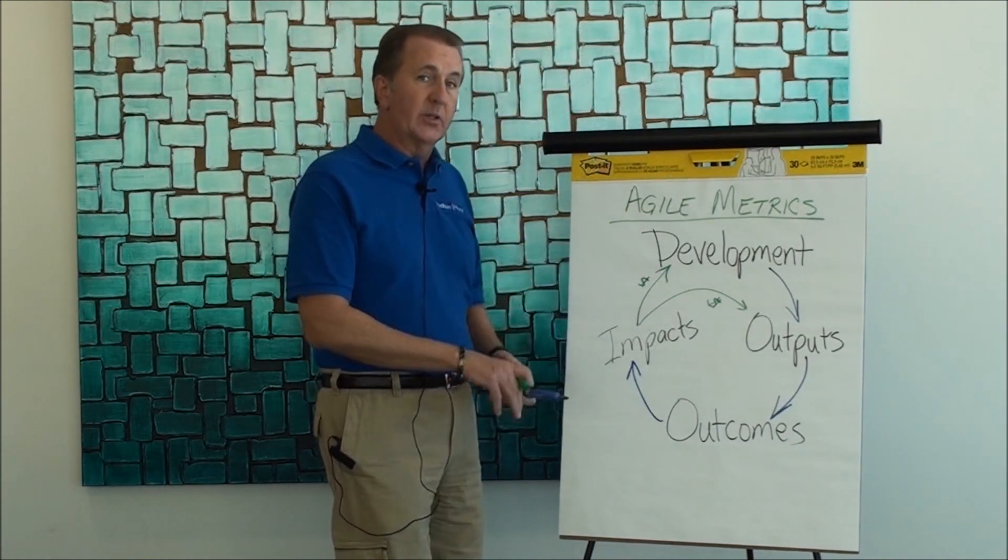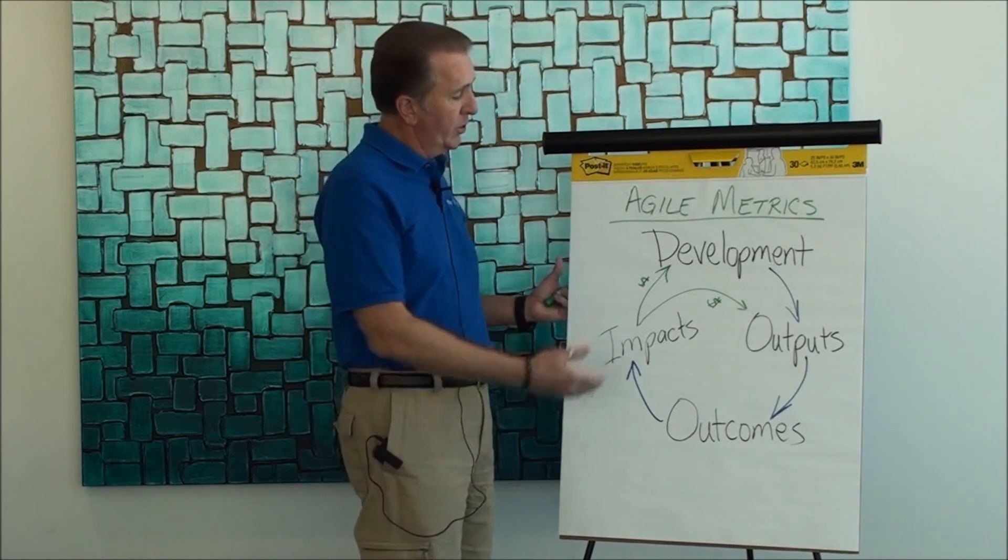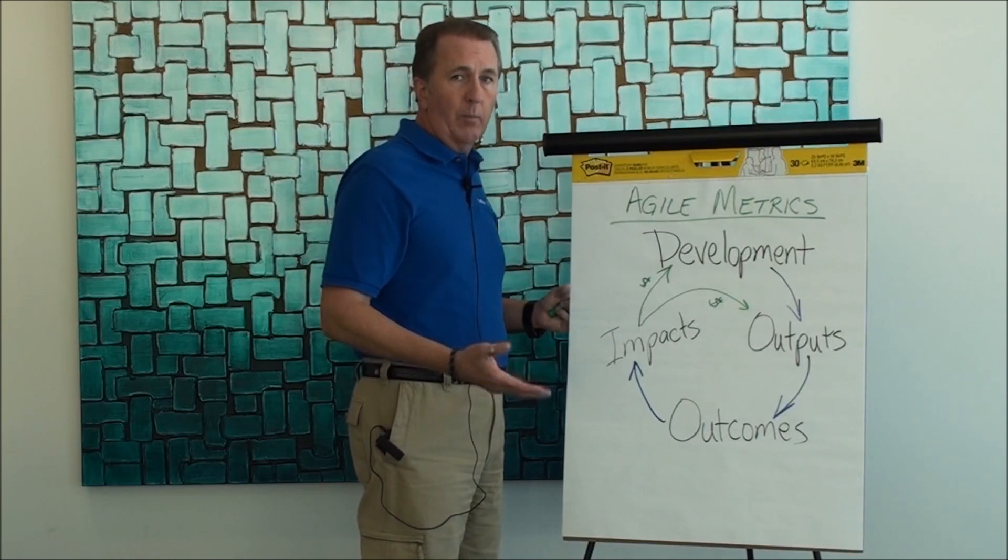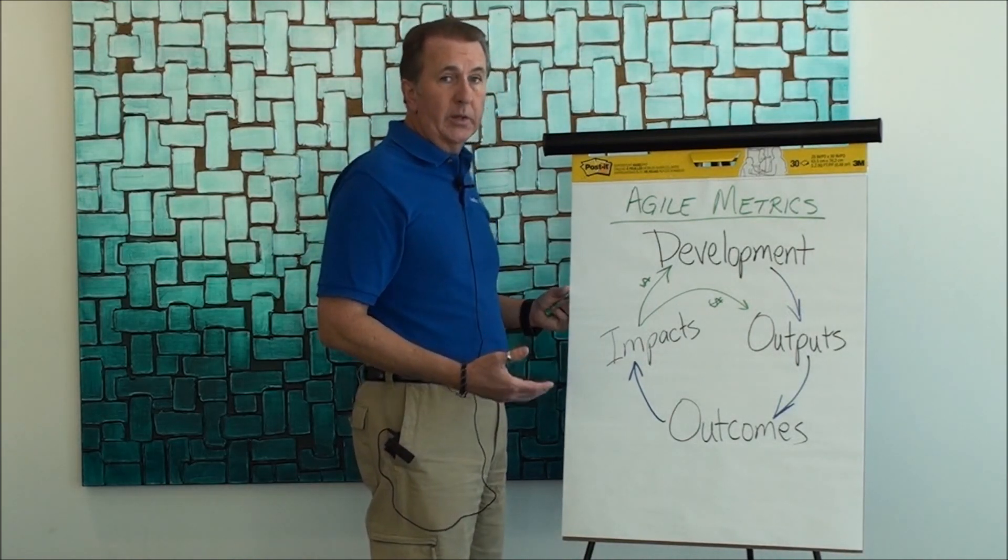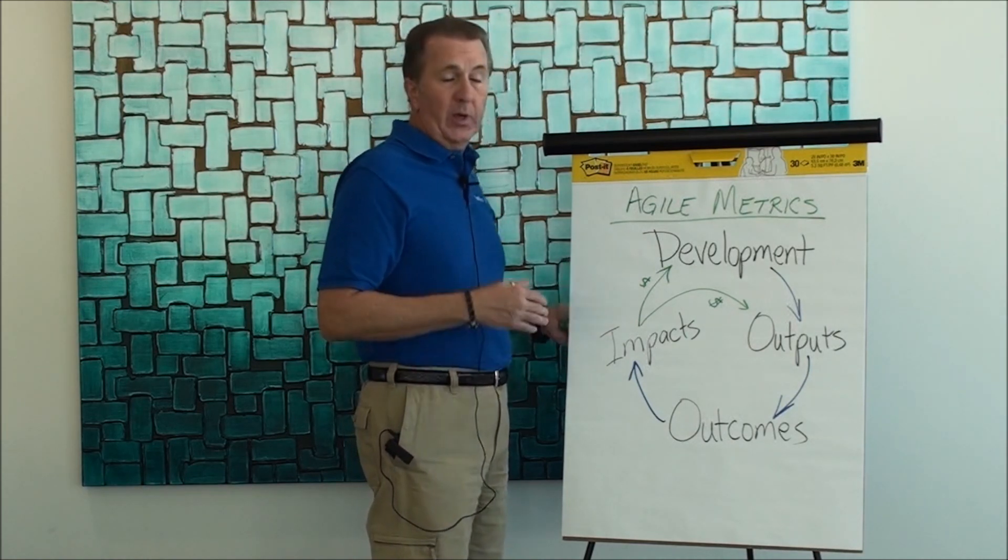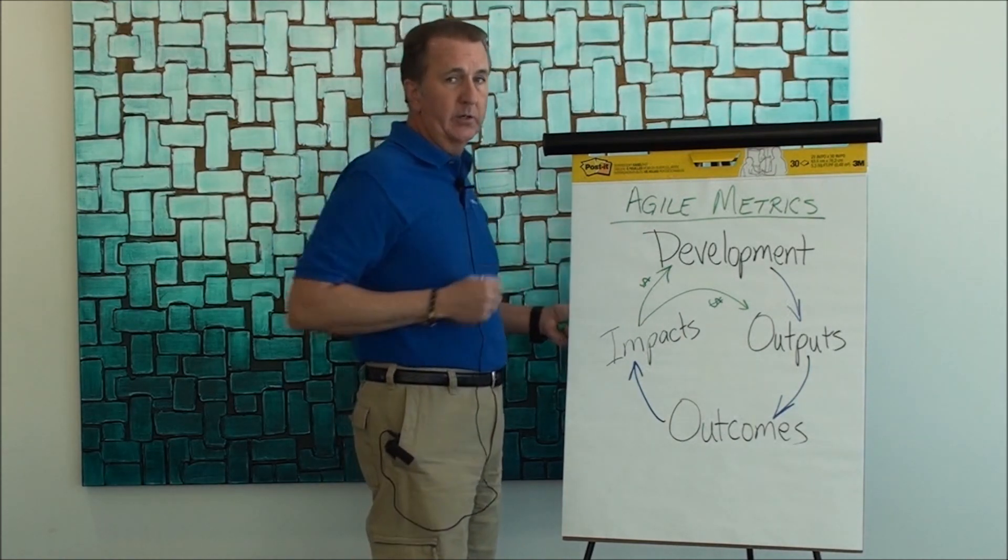Let's look at a couple of examples of these types of metrics. A classic development type metric might be on budget or on schedule. All we're measuring is are we following the plan. That's not necessarily an agile perspective, but a very classic metric that is only measuring development.